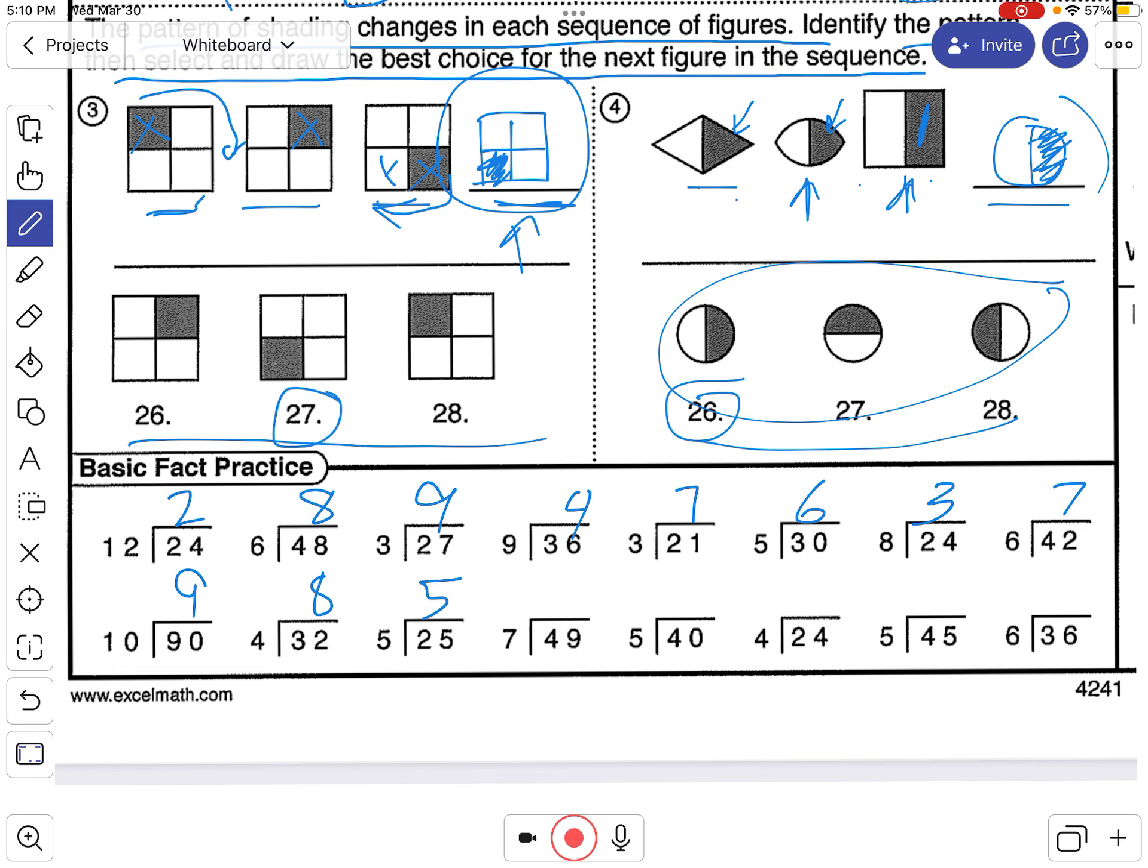4 times 8. 5 times 5 is 25. 7 times 7 is 49. 5 times 8 is 40. 6 times 4 is 24. 5 times 9 is 45. And 6 times 6 is 36. All right. Thanks for watching, everybody.